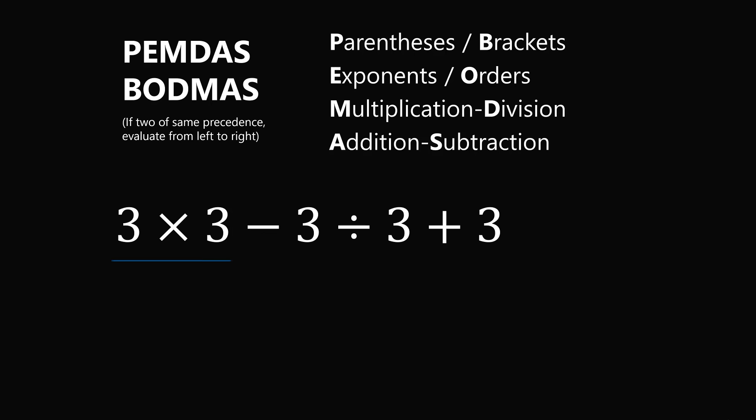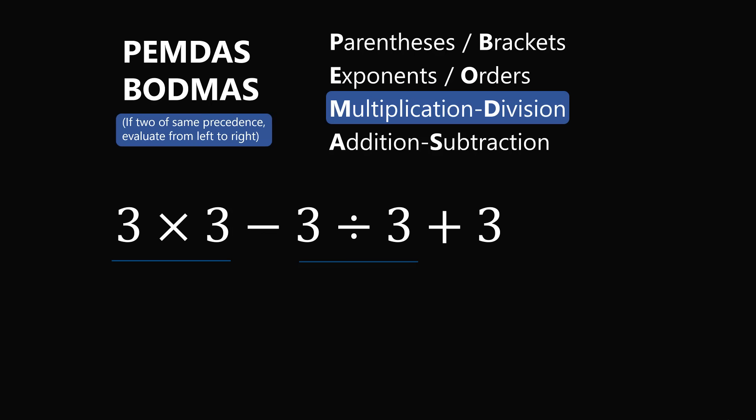So let's take a look at 3 times 3 minus 3 divided by 3 plus 3. We clearly have a multiplication, and we also have a division. These will be the highest precedents. So we look at the step of multiplication and division. Which one do we do first? If you have two operators of the same precedence, evaluate them from left to right. So in this case we go from left to right, so that means 3 times 3 will be evaluated first. 3 times 3 is equal to 9.